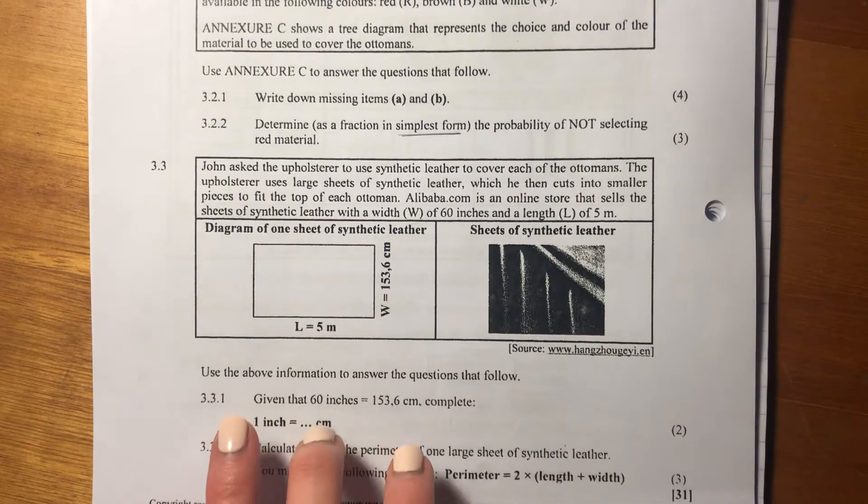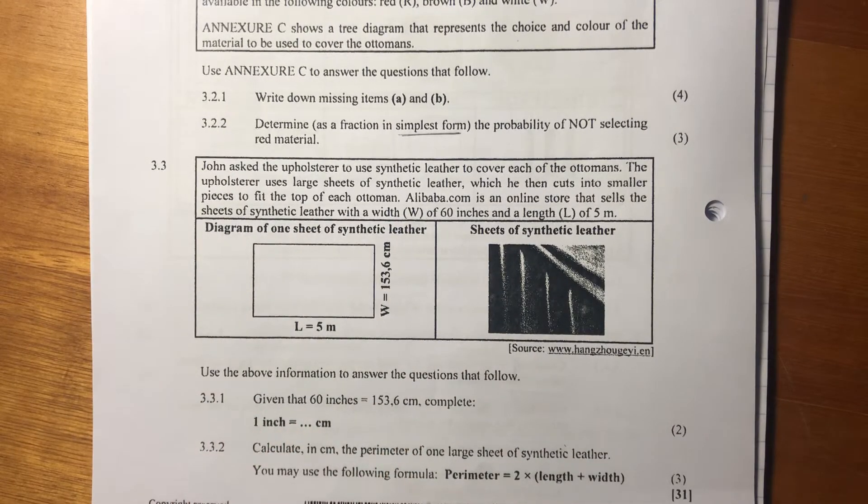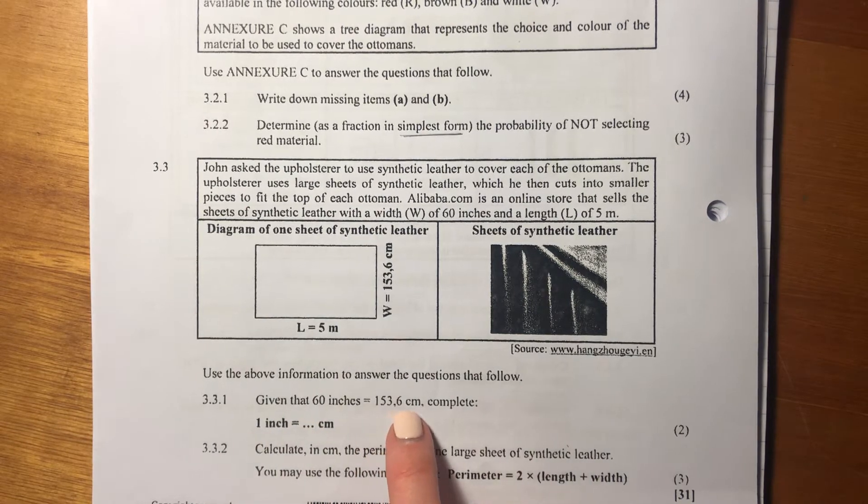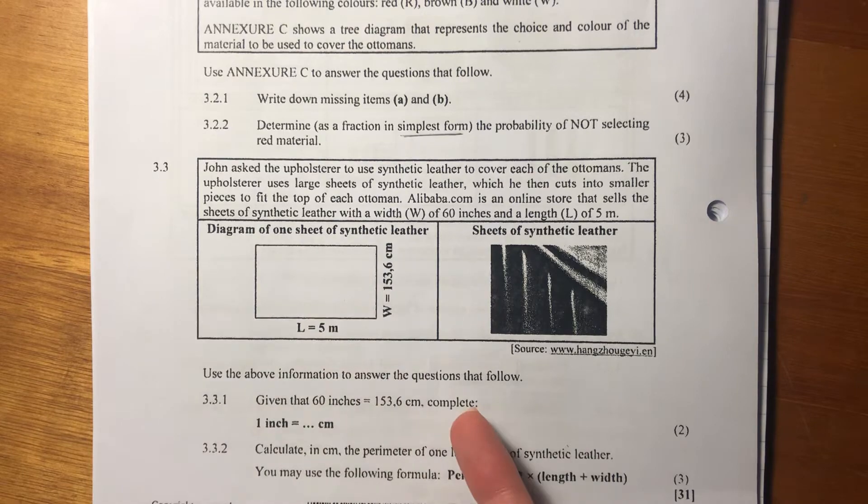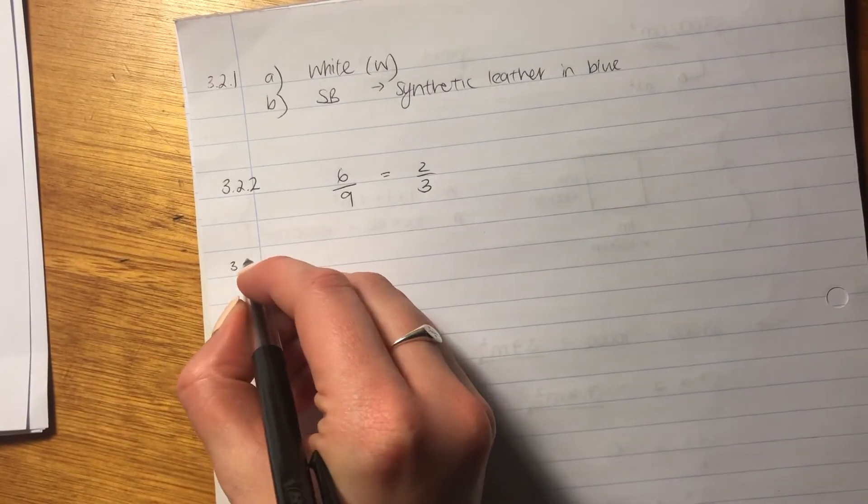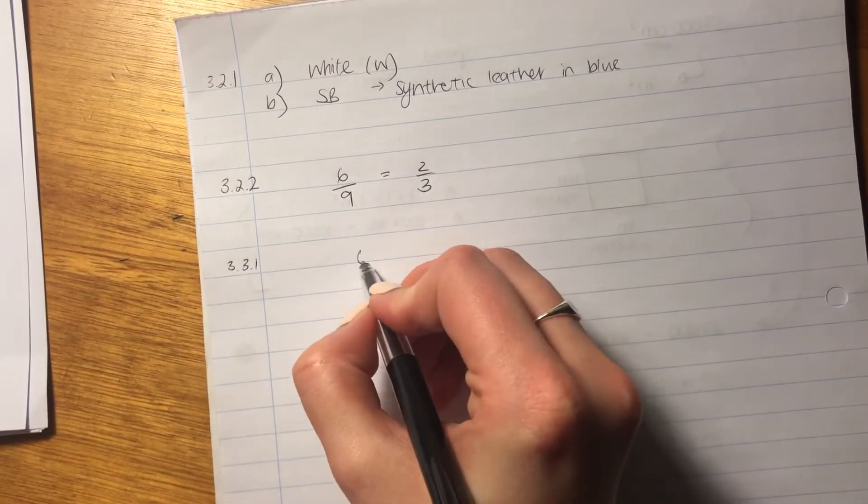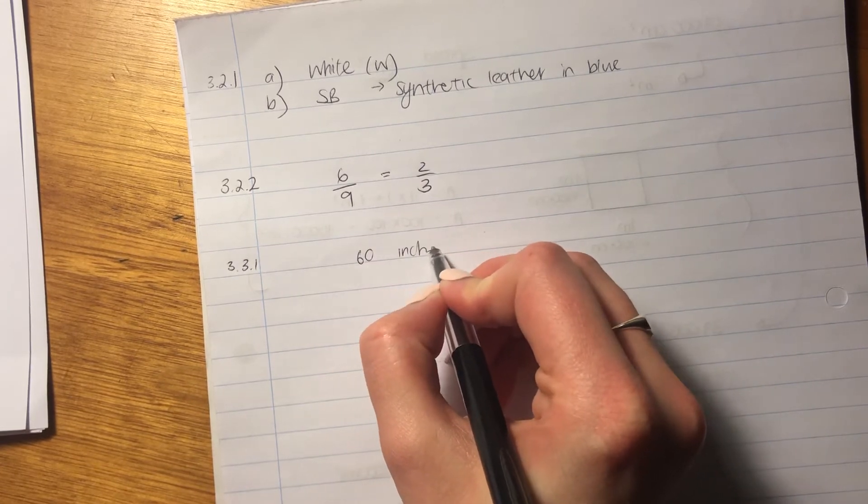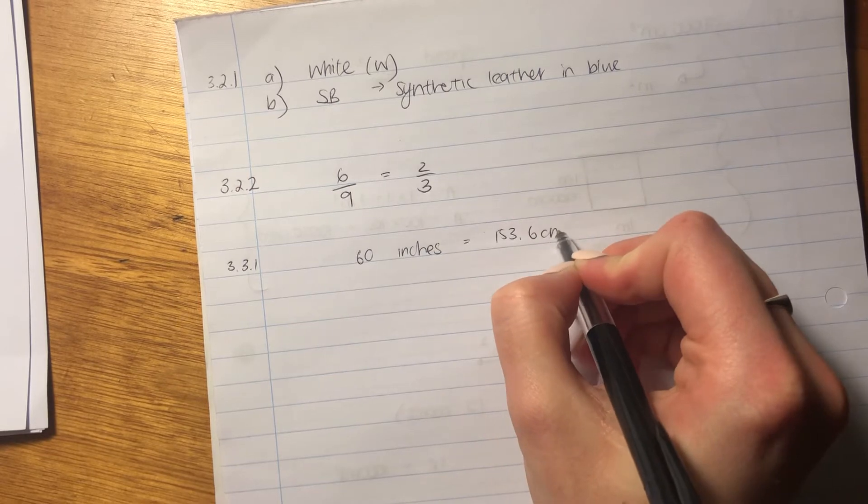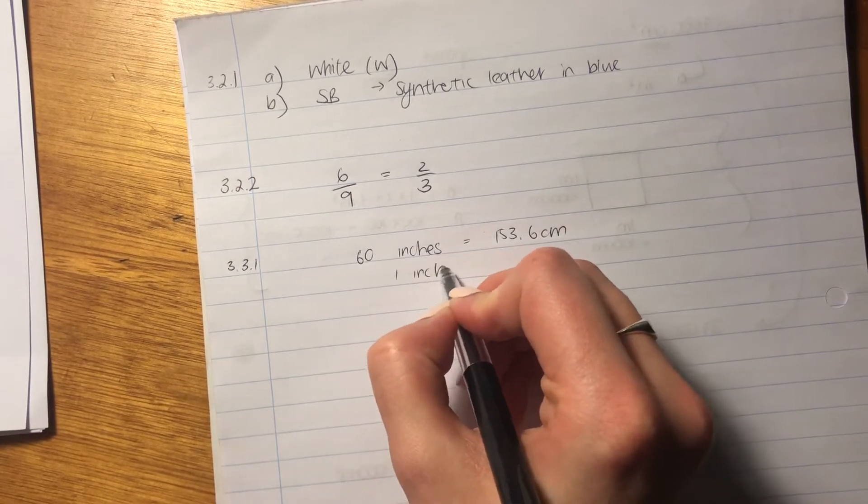The first question says, use the above information to answer the questions that follow. So it says, given that 60 inches equals 153.6 centimeters, we know that, we just saw that, complete one inch to how many centimeters? So this is basically simplifying a ratio. So let's write this down, 3.3.1. So we know that 60 inches equals 153.6 centimeters. Now we want to make this one inch.